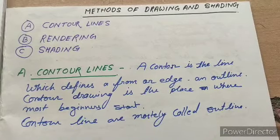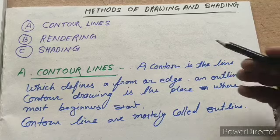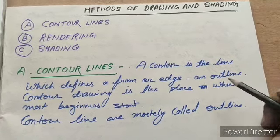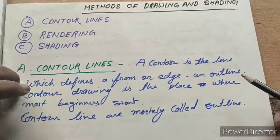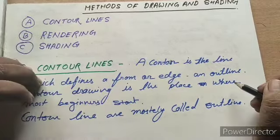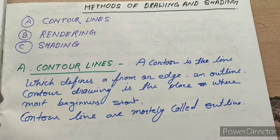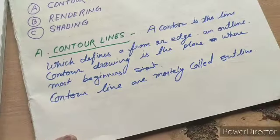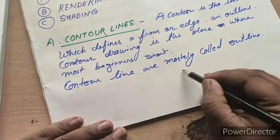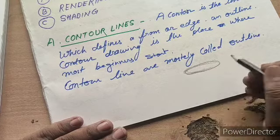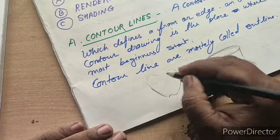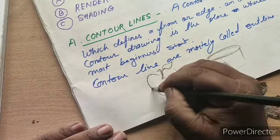So what is a contour line? The contour line is the line which defines a form, edge, or outline. A contour line drawing is the place where most beginners start. We can say that contour lines are mostly called outlines — the outline of the drawing is called a contour line.